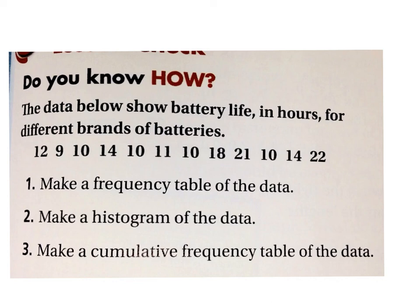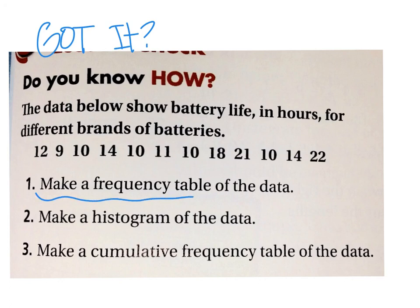Alright. Pause it. These are your got it questions. Write these on a separate sheet of paper. Of course, go back and look if you don't understand it. But here I need you to make a frequency table. Go ahead and make a column for the cumulative frequency, because that's number 3. And then make a histogram of the data. So I'm fine if you just want to go ahead and make a cumulative frequency table and then a histogram, because this is going to be included in number 3 anyway.